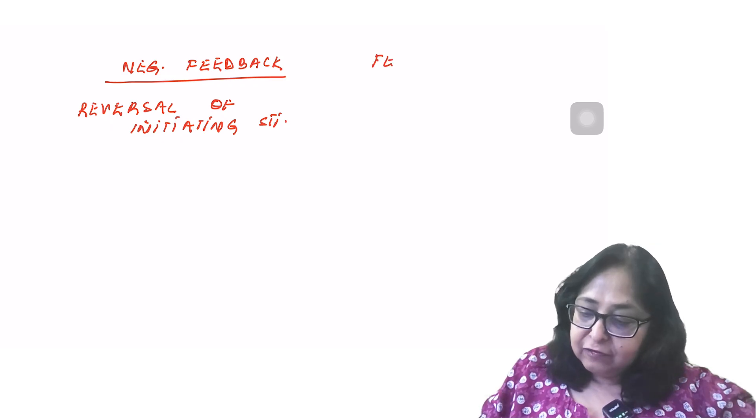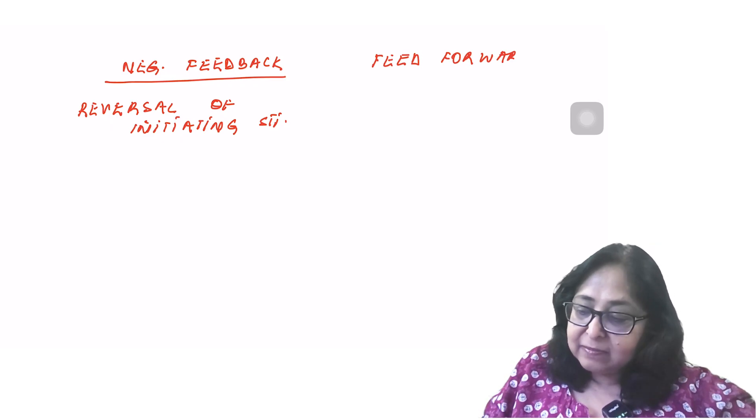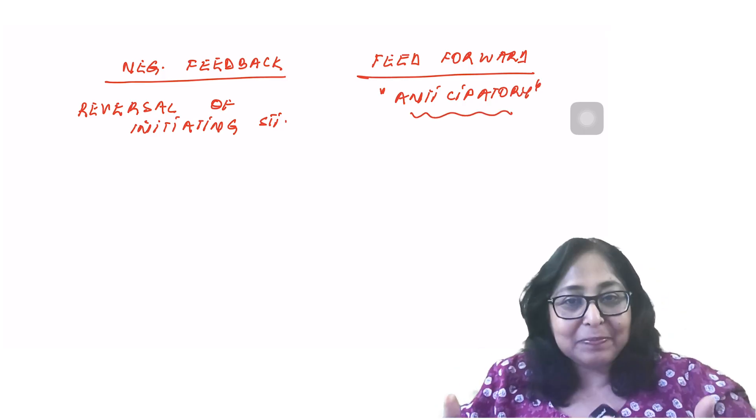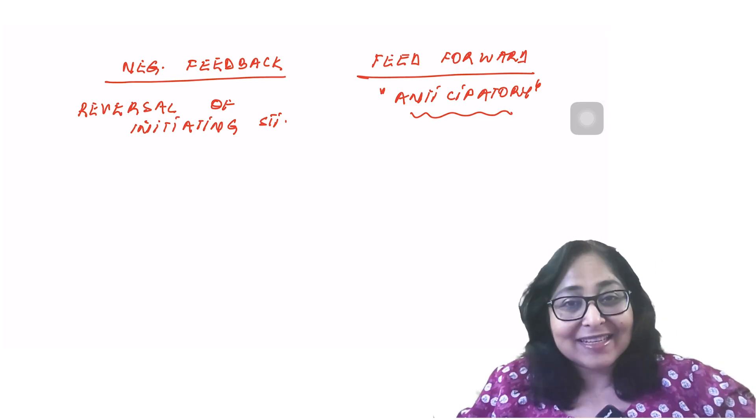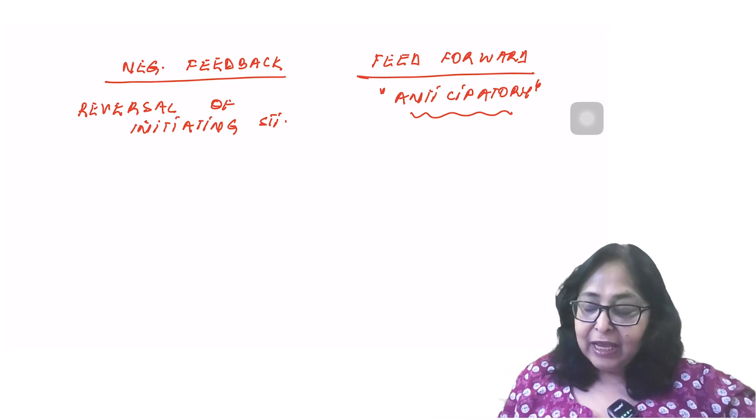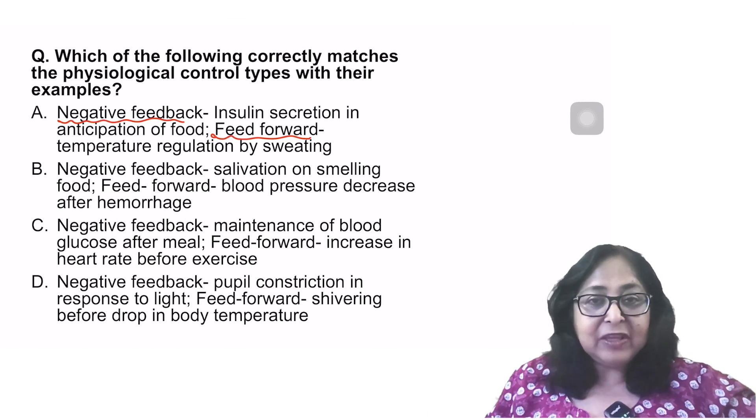What is a feed forward mechanism? A feed forward mechanism is anticipatory. Here the changes are made in anticipation. Increase in heart rate before exercise. That becomes feed forward. So let's have a look at the options.